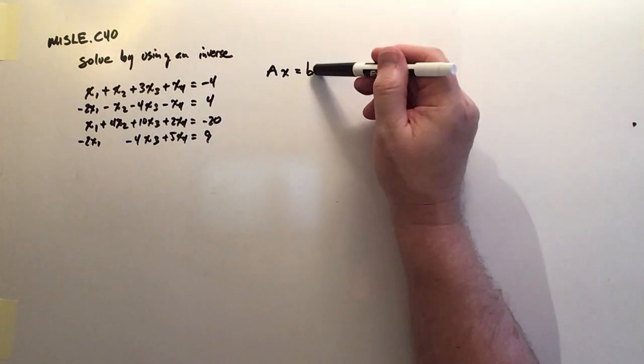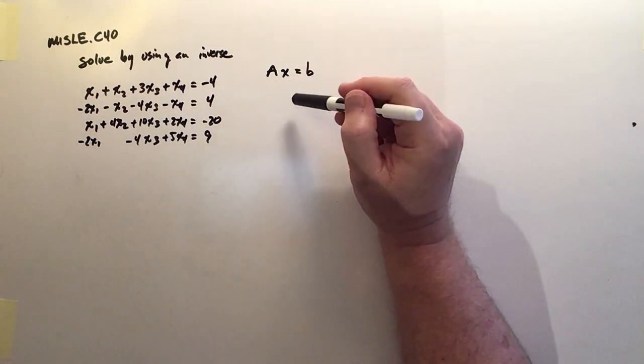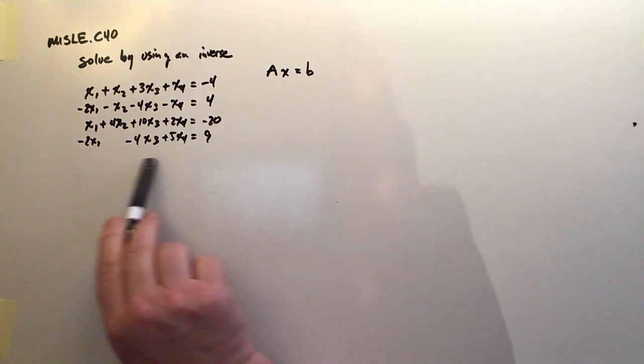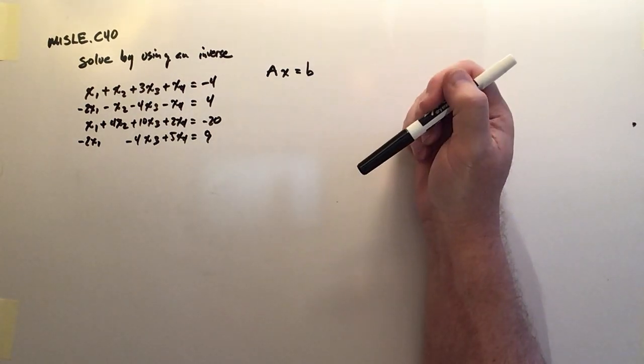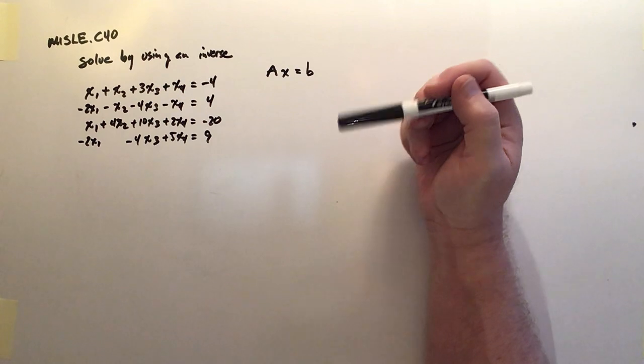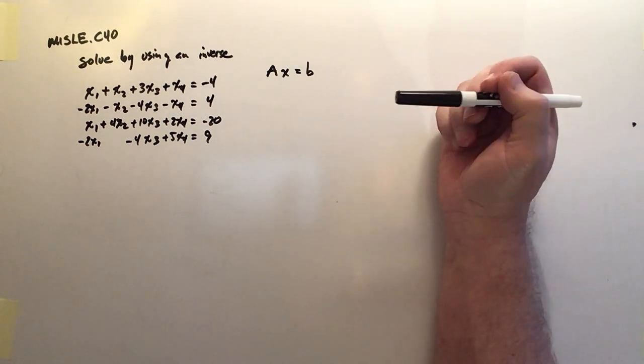The problem is I can't take a vector B and divide it by a matrix that contains four by four columns. There's no mechanism for doing matrix division. We barely have a comfortable mechanism for doing matrix multiplication.